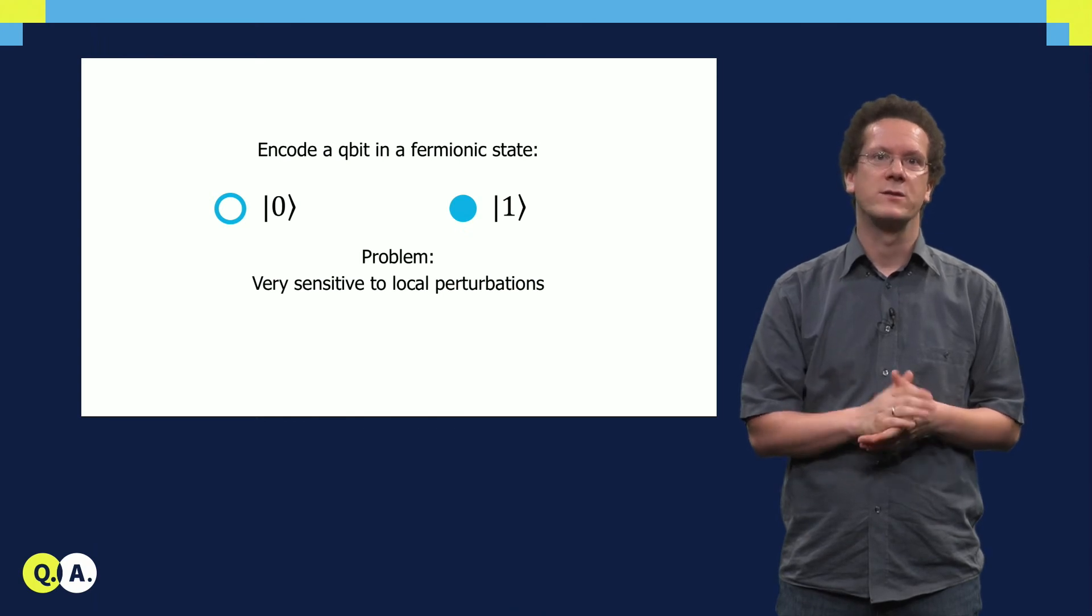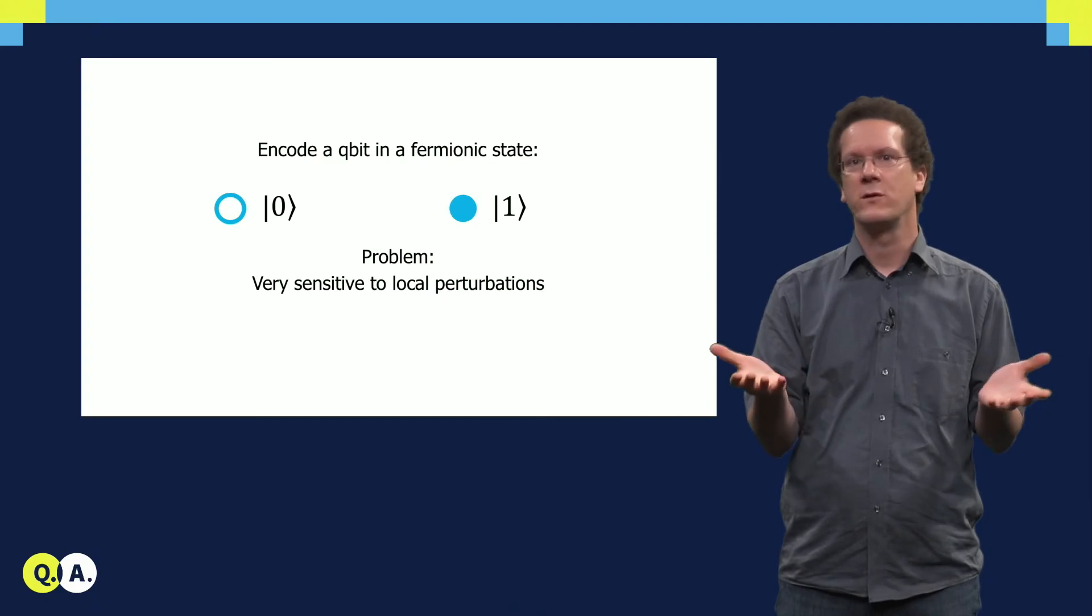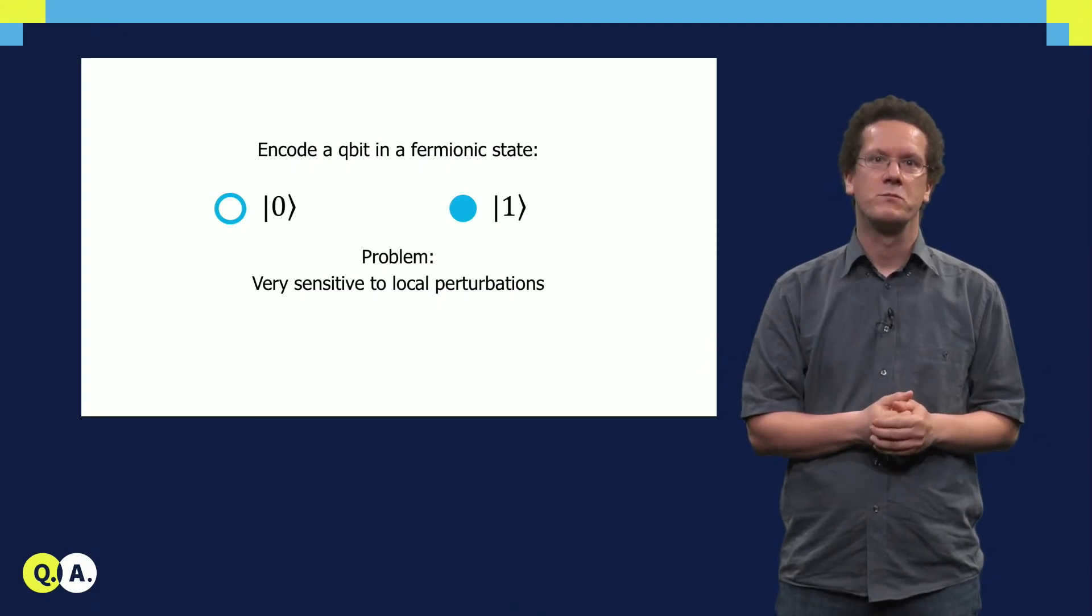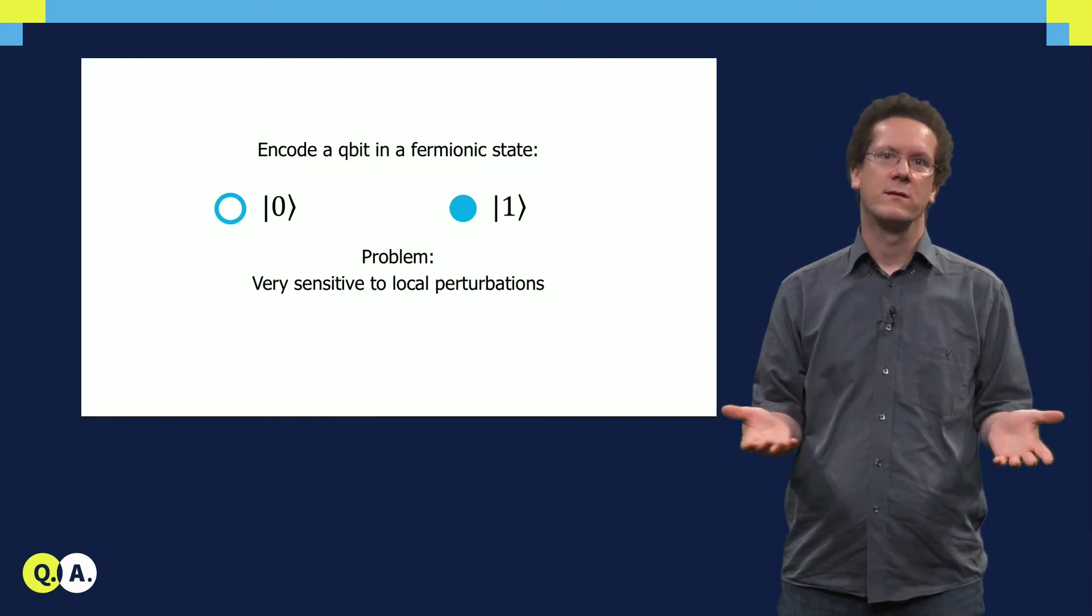Now what is the connection to qubits? With fermionic states, we can encode qubits. If the state is empty, this will be the state |0⟩ of the qubit, and if it is filled, it is the state |1⟩. An example for this are charged qubits.